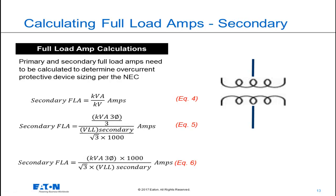Calculating the secondary full load amps is very similar to how we calculated the primary full load amps. The difference is that I'm using the secondary voltage instead of the primary voltage in the standard equation. So we have the three-phase kVA times 1,000 over the square root of 3 divided by the secondary line-to-line voltage. That gives us the secondary full load amps.